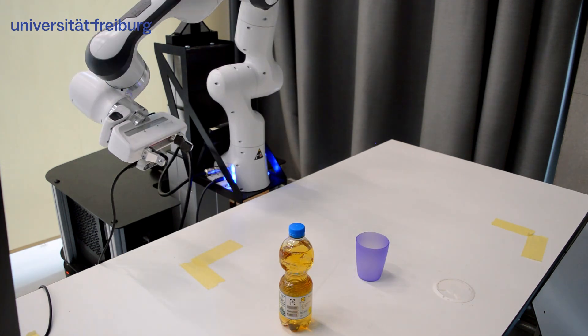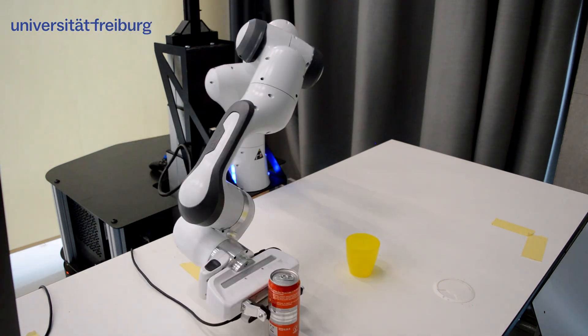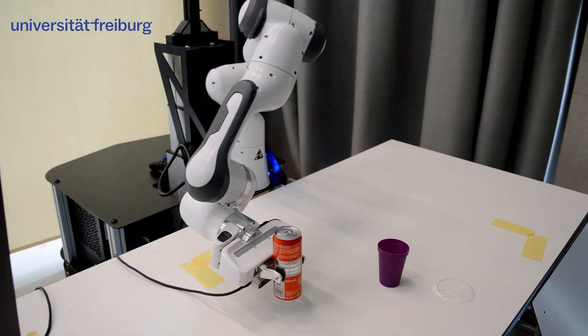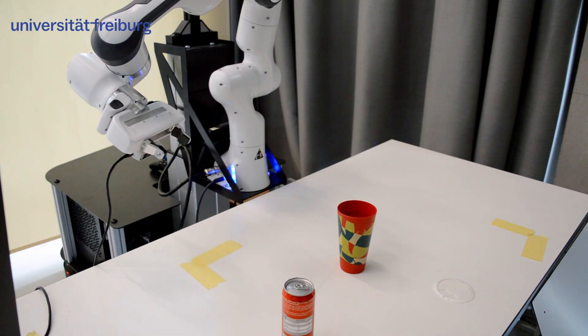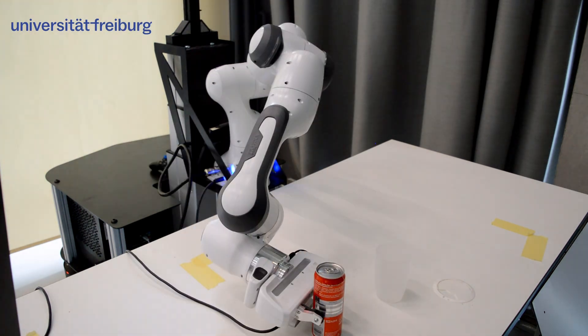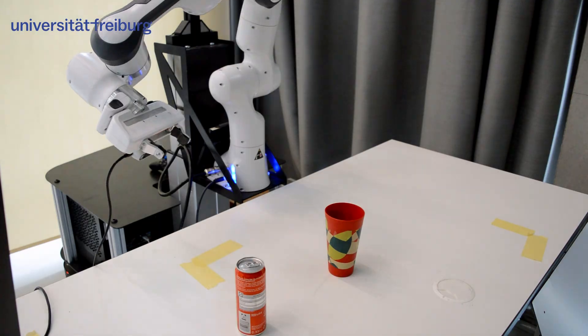The pouring task for example was trained using the single red can and purple cup. Yet our policy robustly generalizes to this wide array of different cans, bottles and cups with different shapes, colors and sizes.